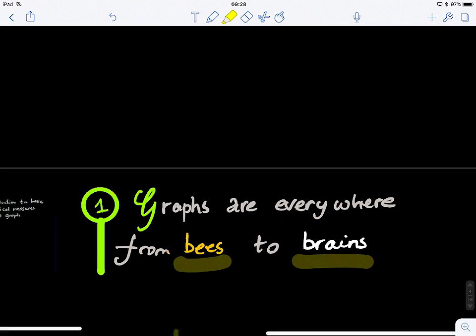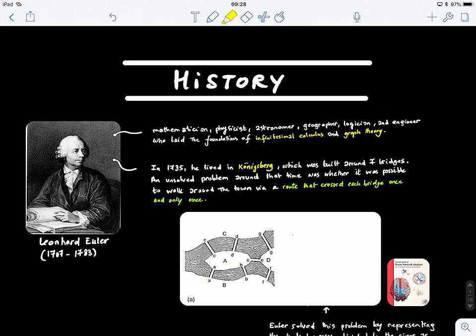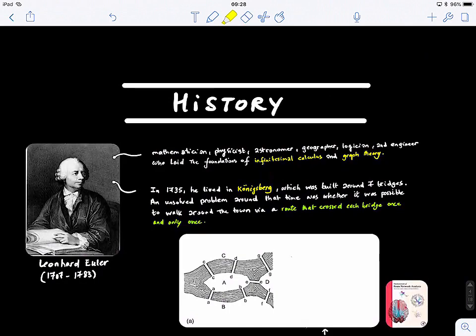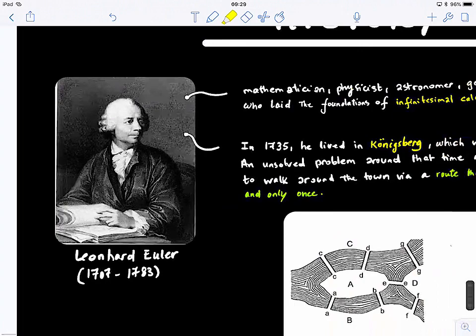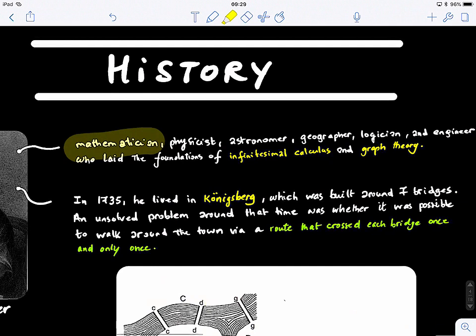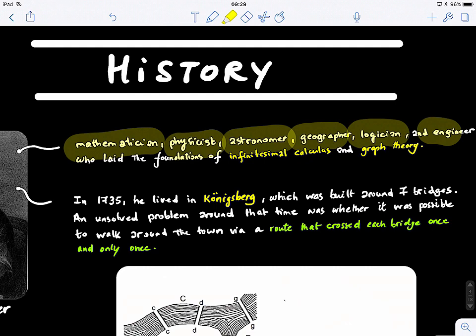A little bit of history. Who invented graphs? Who came up with the definition of a graph? This was the first guy who invented the word graph. According to history, Leonard Euler was the one who came up with this word, he defined a graph. He's a mathematician, physicist, astronomer, geographer, logician, engineer, and he laid back the foundations of infinitesimal calculus and graph theory.